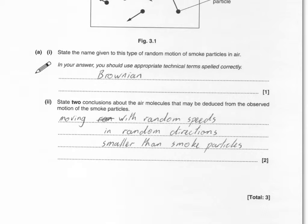I think that from that motion you could probably argue that you can see that the air particles are smaller than the smoke particles simply because you can't see them. So that one's a third possible answer. I think the key answer is really random speeds and random directions.